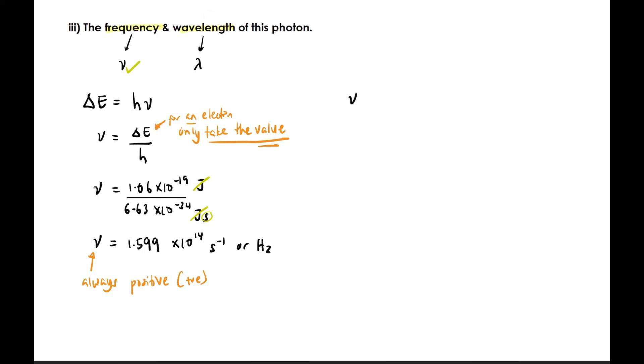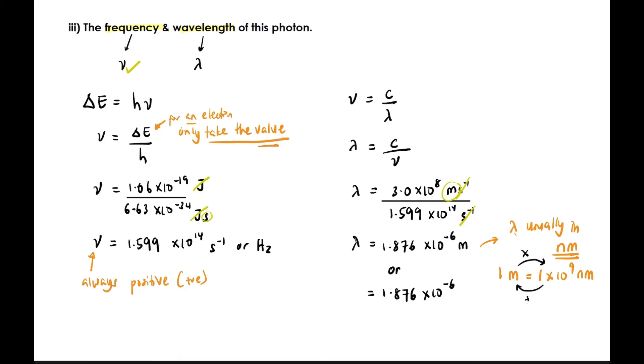Now for wavelength, or lambda. We know the formula nu equals c over lambda, so we rearrange: lambda equals c over nu, where c is always 3 times 10^8 meters per second, the speed of light, divided by nu, which we just calculated as 1.599 times 10^14 s^-1. Cancel s^-1 and you get 1.876 times 10^-6 meters. This is also always positive. Wavelength is measured in meters, but usually lambda is asked for in nanometers. To convert from meters to nanometers, you need to know that 1 meter equals 1 times 10^9 nanometers. To convert from meters to nanometers, multiply by 10^9. To go back to meters, divide by 10^9. So we multiply our value by 10^9 to get 1.876 nanometers.